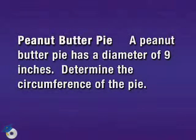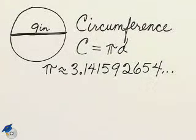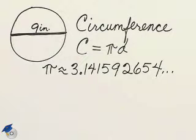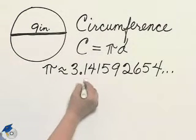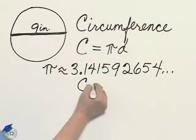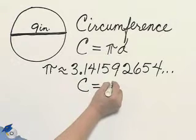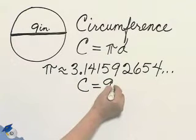A peanut butter pie has a diameter of 9 inches. Determine the circumference of the pie. The circumference of a 9-inch diameter pie will be 9 times pi.